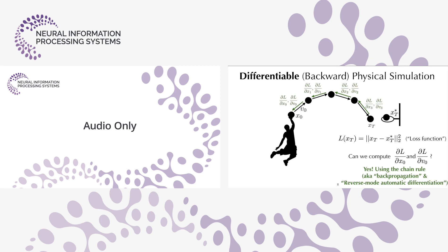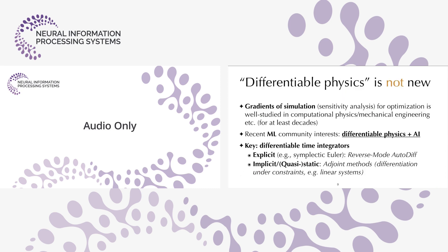It's not hard — you can just use the chain rule, also called back propagation or reverse-mode auto-diff, accumulating gradients from the final state back to the initial state. One important application is to use the gradient to do optimization, aligning x_t and x_t* — basically moving the basketball into the basket. Differential physics is not new; gradients of simulation for optimization have been well studied in computer physics and mechanical engineering for many years.